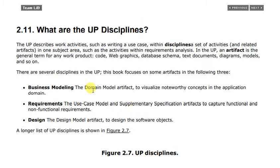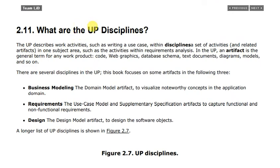Next, topic 2.11: what are the UP disciplines? The UP describes work activities, such as writing a use case, within a discipline. A discipline is a set of activities and related artifacts in one subject area, such as the activities within the requirement analysis.